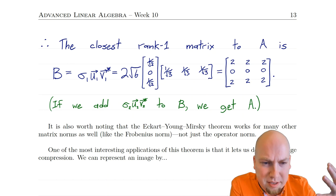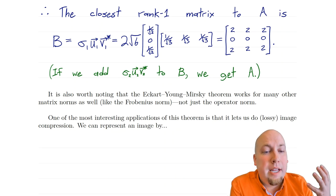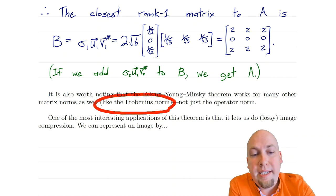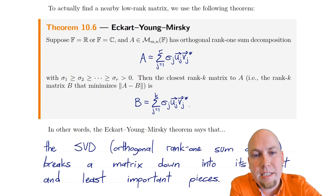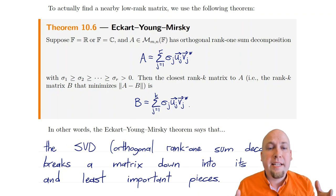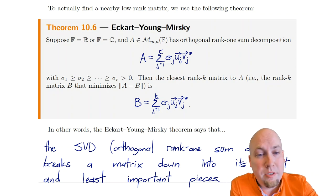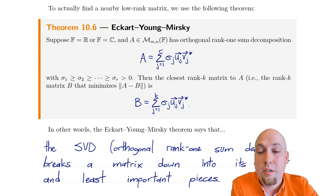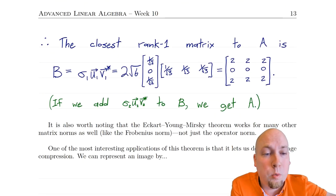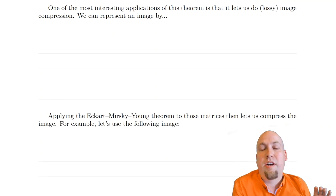Before going on to a nice application of this theorem, it's worth noting that the Eckart-Young-Mirsky approximation theorem works the exact same way with many other matrix norms — for example, the Frobenius norm. If you don't like the operator norm for measuring distances between matrices, you can use the Frobenius norm and the conclusion is the same: this is still the closest rank-K matrix. This holds for any matrix norm that is unitarily invariant — unchanged under left or right multiplication by a unitary matrix.